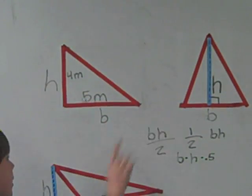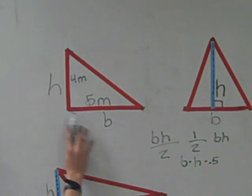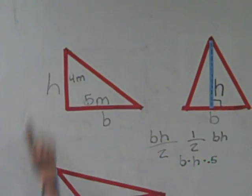On this triangle, the base is the bottom, and the height is perpendicular to the base and reaches the highest point of the triangle.